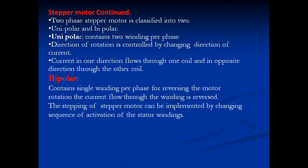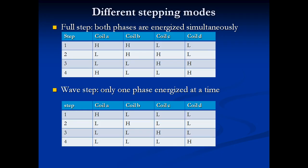Stepper motors are classified based on phases into unipolar and bipolar. In unipolar, there are two windings per phase, and the direction of rotation is controlled by changing the direction of current — either clockwise or anticlockwise. Bipolar contains a single winding per phase; reversing motor rotation is done by changing the direction of current. Different stepping modes: full step — both phases get energy simultaneously, so out of four coils two get energy at a time, giving four steps.